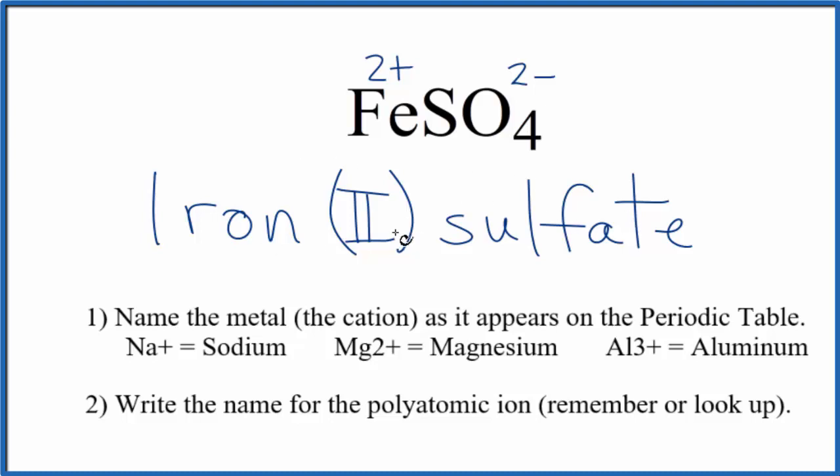If you were given the name and asked to write the formula, you'd know the iron had a 2 plus ionic charge because of the 2 here. You'd also remember the sulfate ion that has a 2 minus charge. So you just write Fe with 1 sulfate. So FeSO4. This is Dr. B with the name for FeSO4, iron 2 sulfate. Thanks for watching.